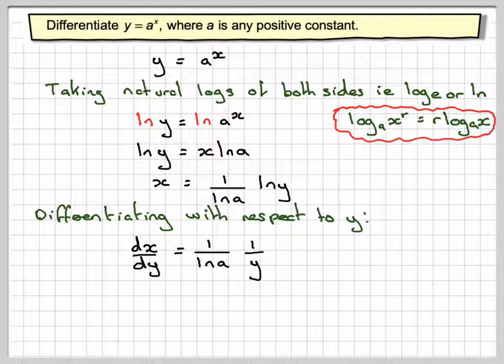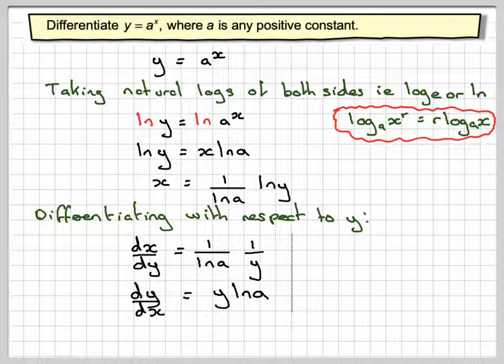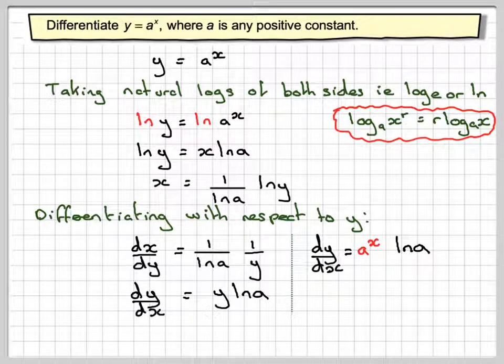And now if we rewrite that as dy by dx, i.e. by taking the reciprocal, that will become dy by dx is y ln of a. But y, to begin with, was a to the x. So dy by dx will be equal to a to the x ln of a.